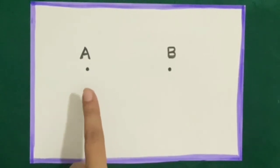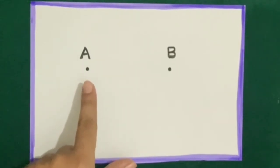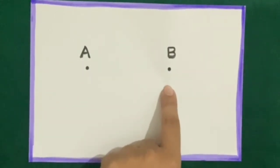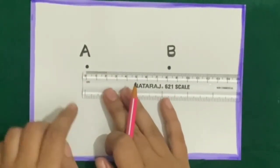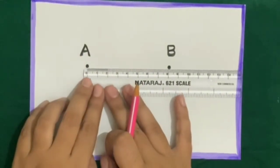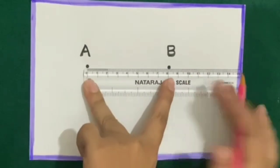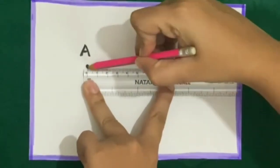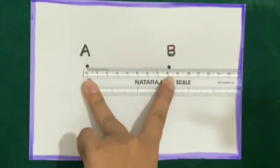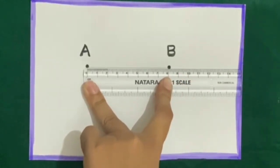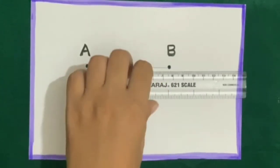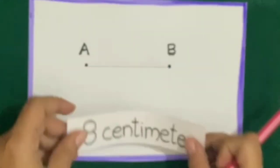In this question we will measure the distance between point A and point B by drawing a line. To measure the distance, we will put the 0 point of the scale at point A, then draw a line along the scale. The number at point B is 8, which means the length of this line is 8 centimeters.